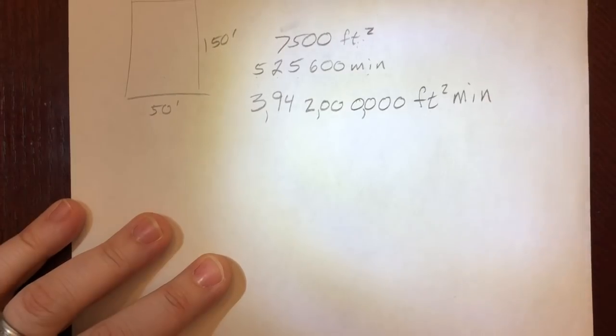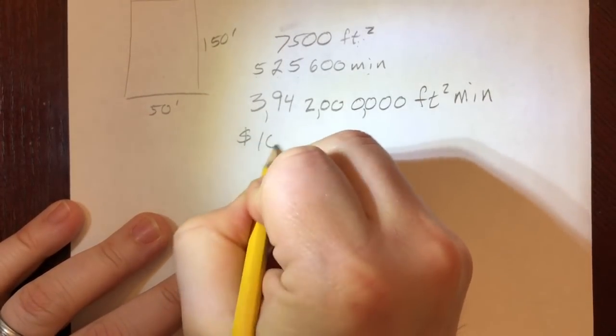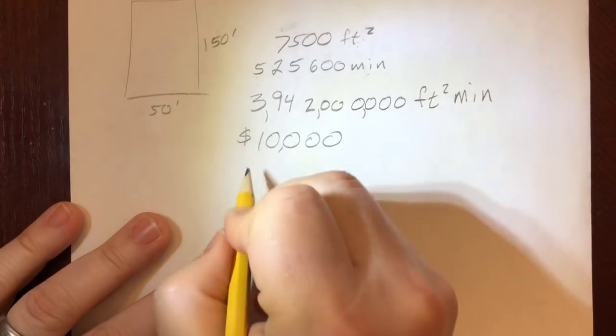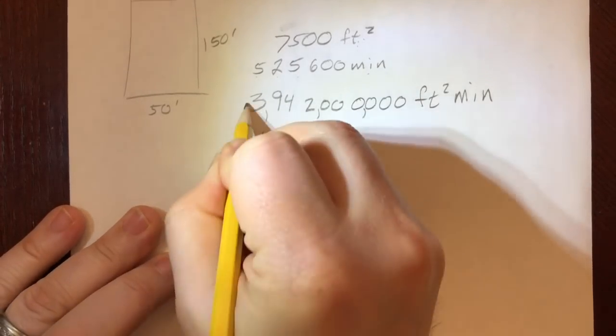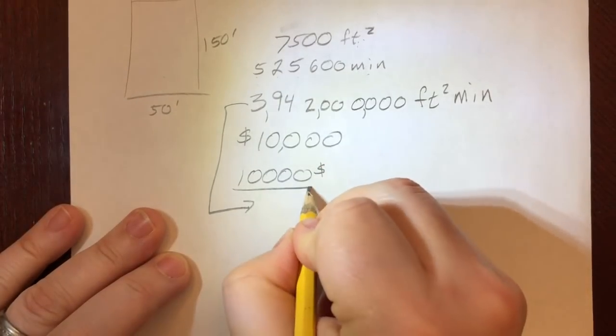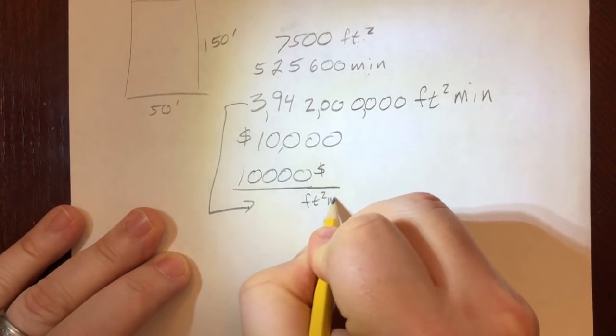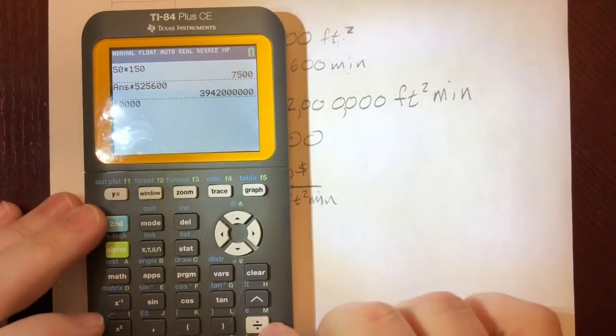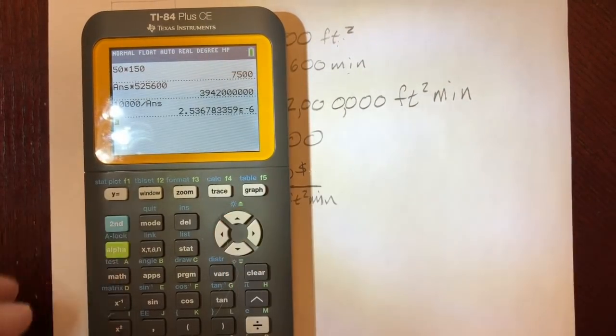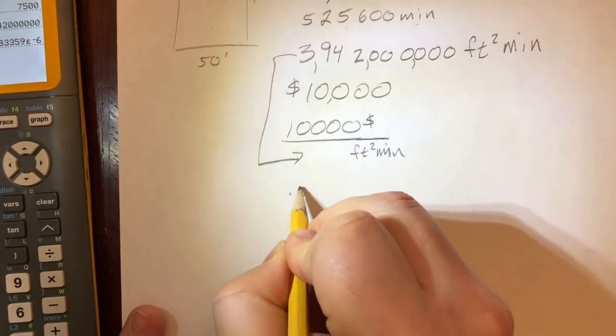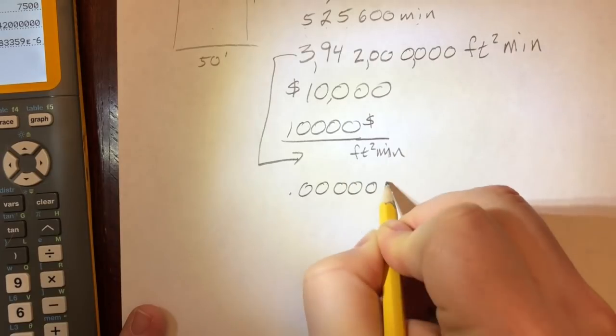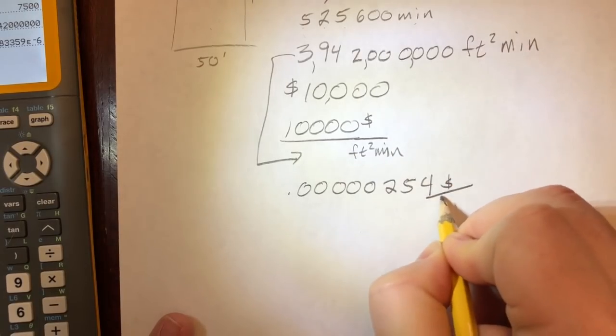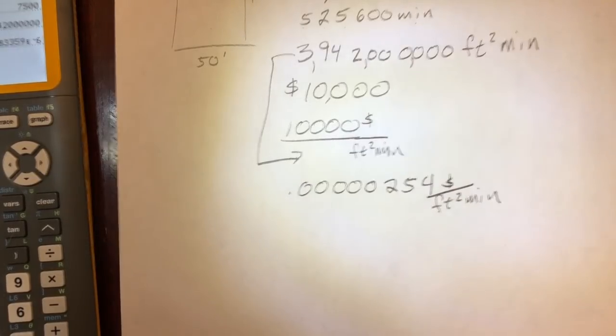Using my taxes as a comparison, let's assume that his taxes are $10,000 for the year. So if I take $10,000 and divide it by that, that would give me dollars per square foot-minute. Let's do that. Let's take $10,000 divided by the previous answer, and we end up with 0.0000002534 dollars per square foot-minute.